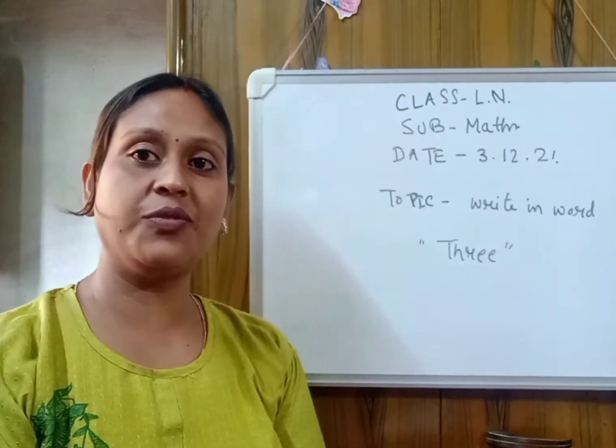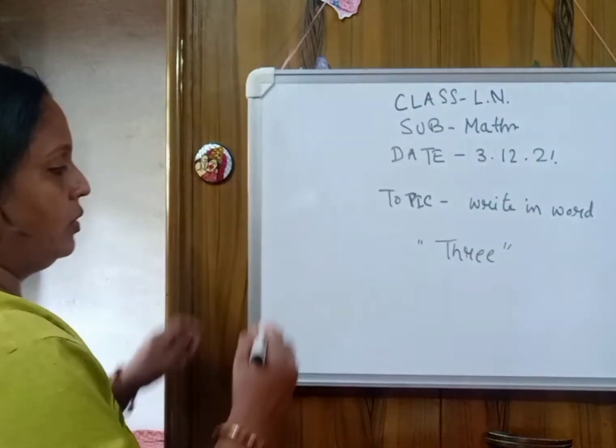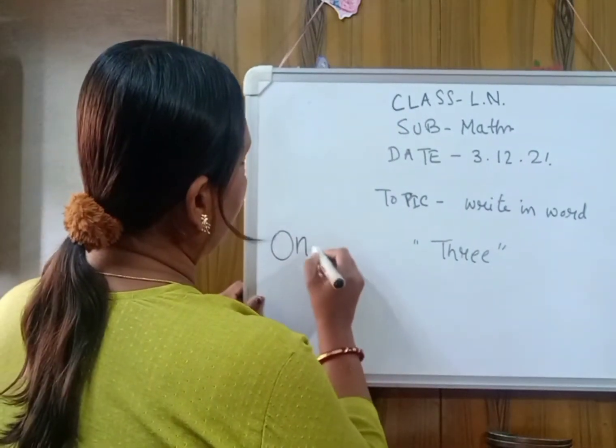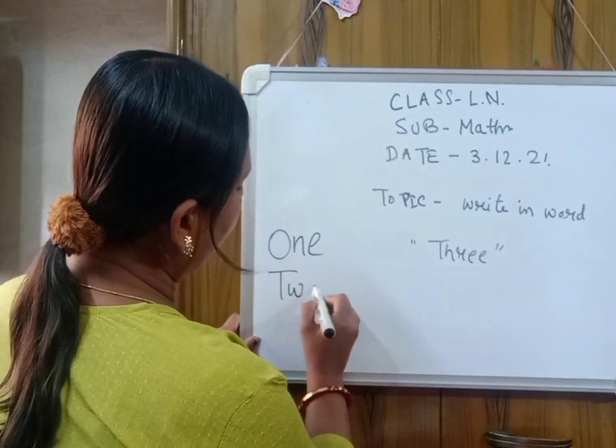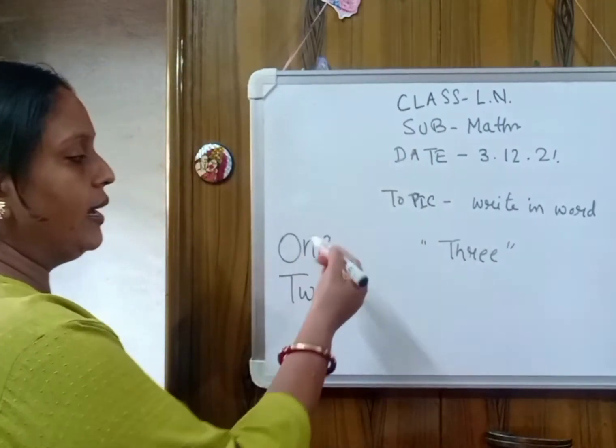So let's revise once again. O-N-E-1, T-W-O-2. We have already learnt these 2 spellings.